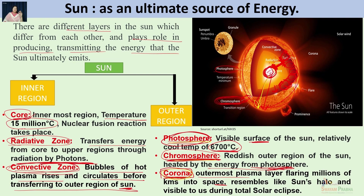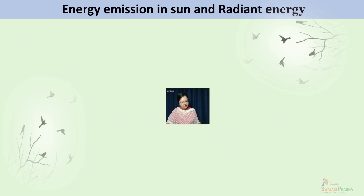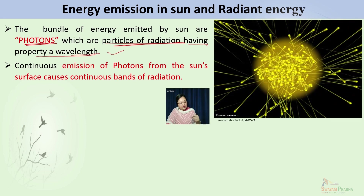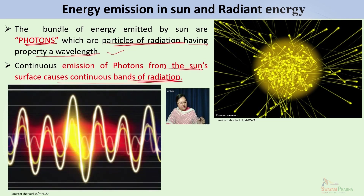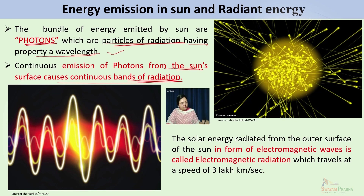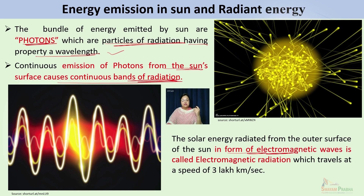The bundles of energy emitted by the sun are called photons — particles of radiation with wavelength properties. The continuous emission of photons from the sun's surface creates continuous bands of radiation dispersed into space. This solar energy, radiated from the outer surface of the sun in the form of electromagnetic waves, is also called electromagnetic radiation. These radiations travel at a very high speed of approximately 300,000 kilometers per second, propagating through space and lighting up the entire solar system, with a minute fraction received by Earth.